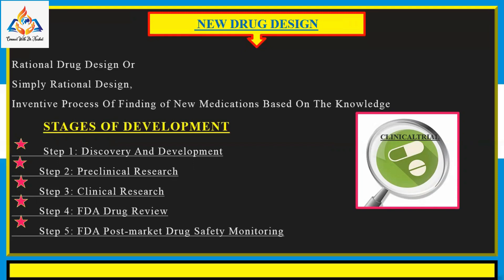Drug discovery is a process intended to identify a small synthetic molecule or a large biomolecule for comprehensive evaluation as a potential drug candidate. Once a lead candidate is identified, a typical preclinical development program consists of six major efforts, including manufacture of the drug substance, active pharmaceutical ingredient, pre-formulation and formulation, which is dosage design, and analytical and bioanalytical methods development and validation, and lastly metabolism.